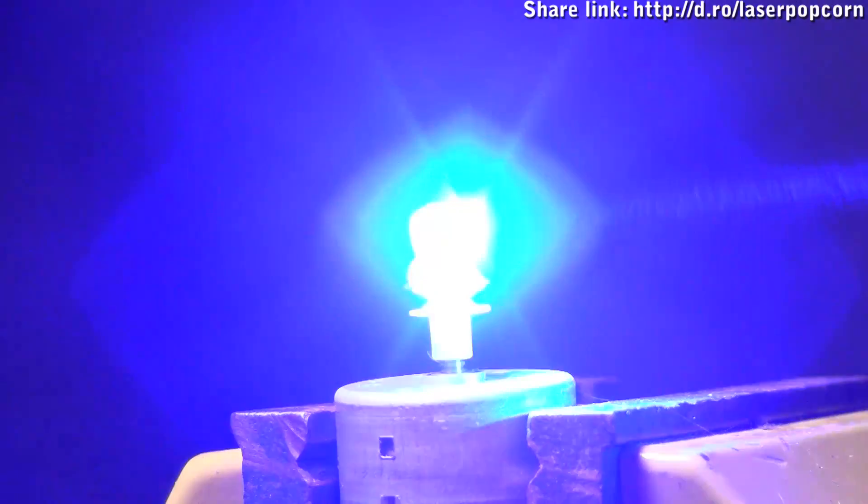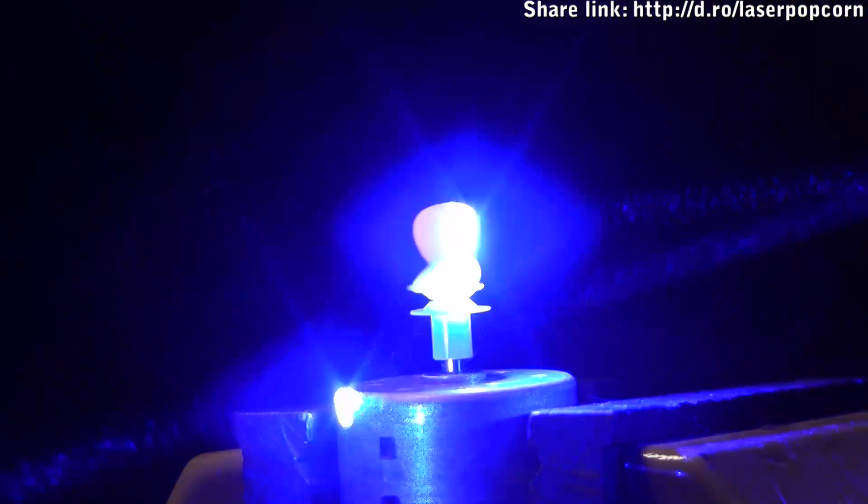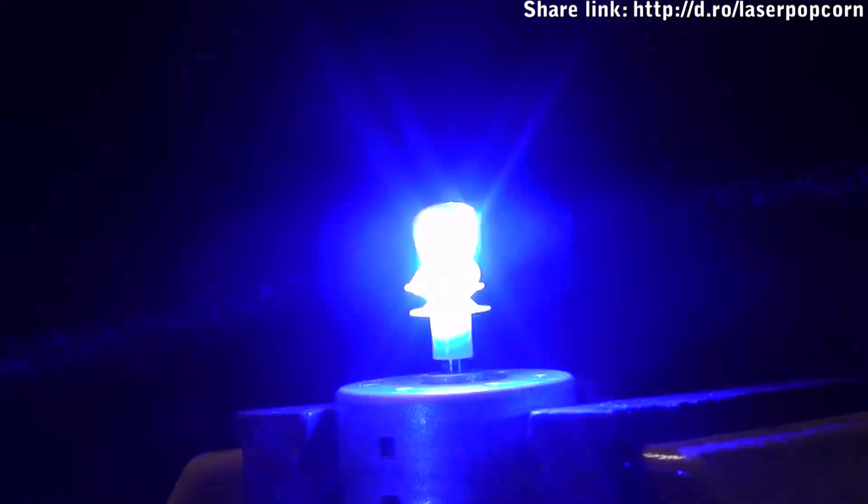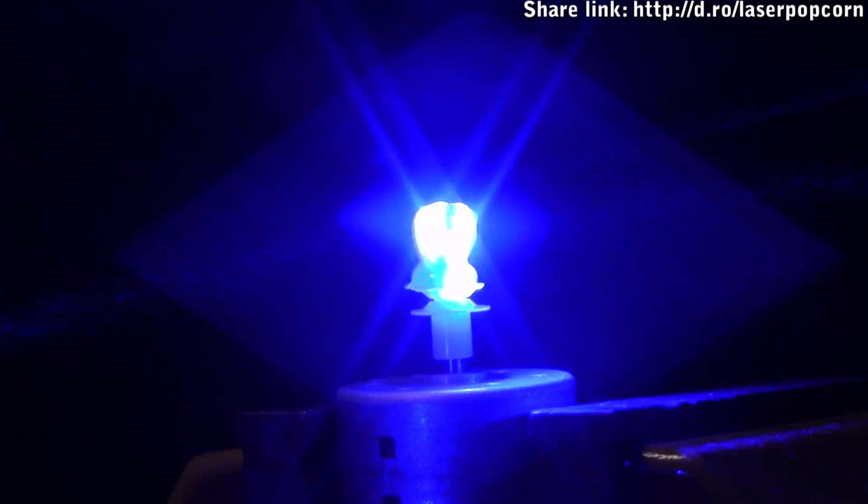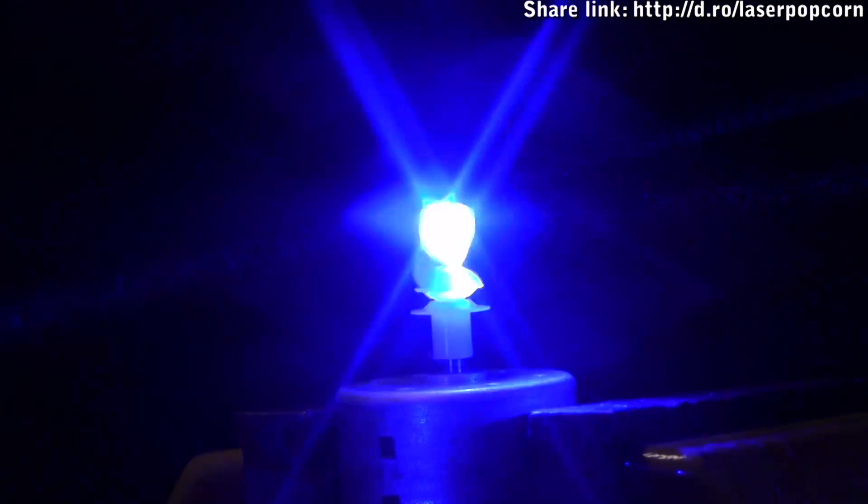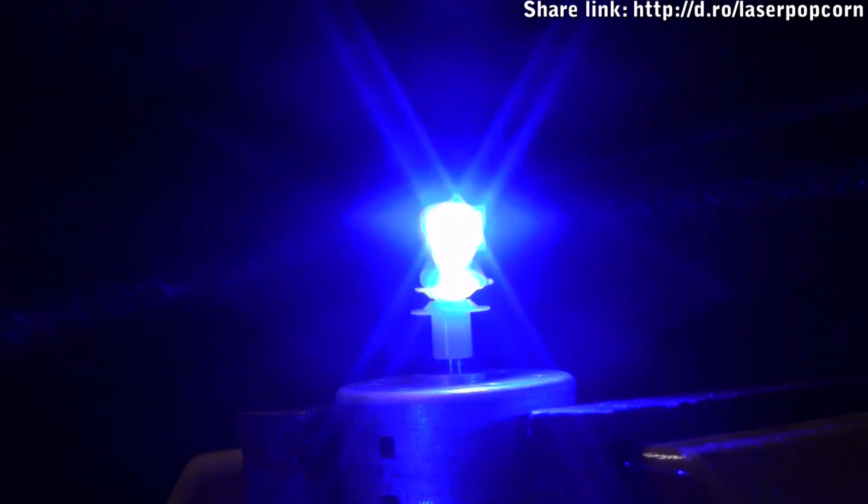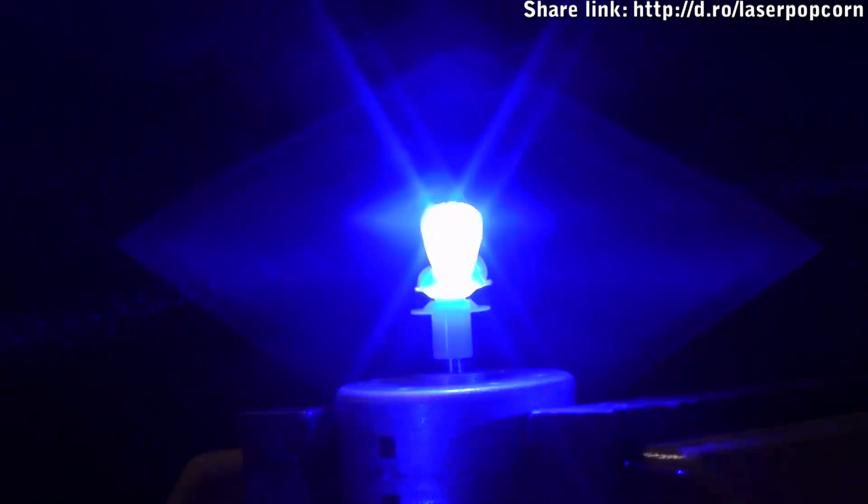So, we turn on the first laser, and then the second laser, and train it on the kernel, like so, and let it heat up. It has to get to 300 degrees Fahrenheit, which is 150 degrees Celsius, so the lasers need to remain on it for a bit while it heats up.